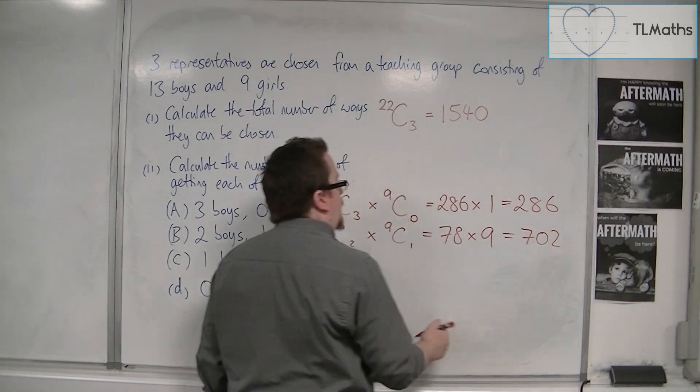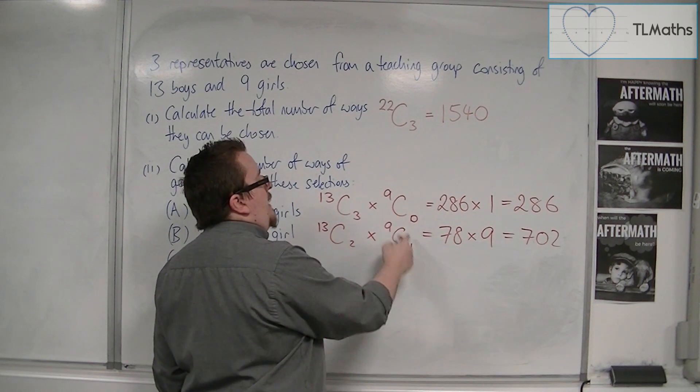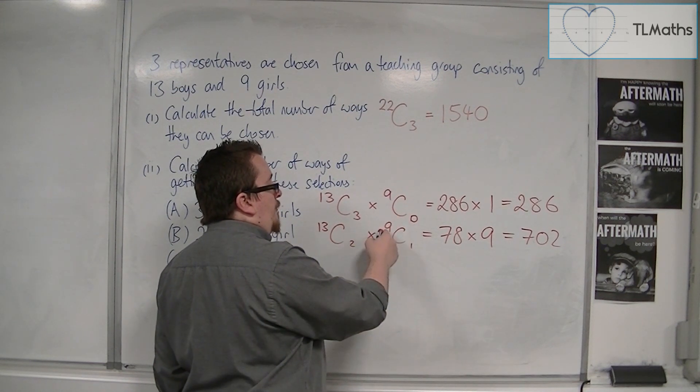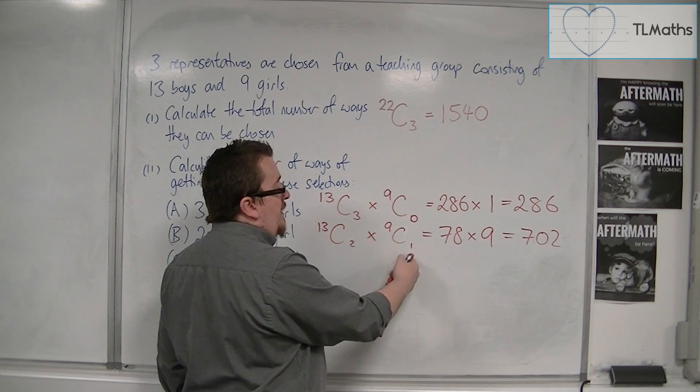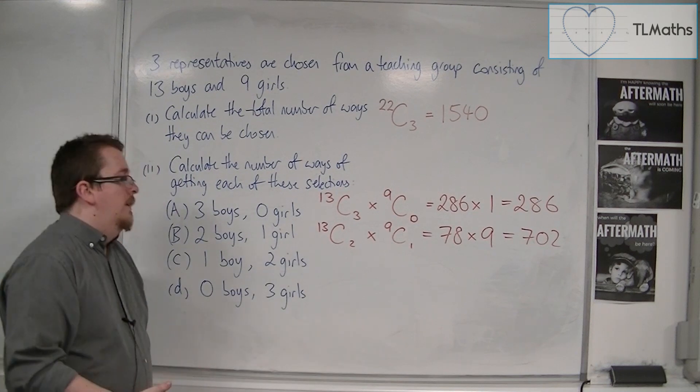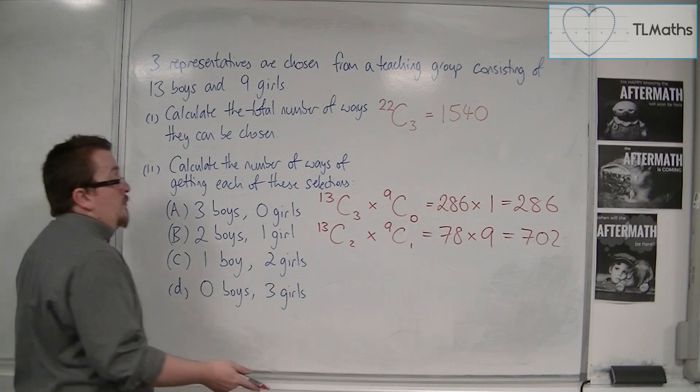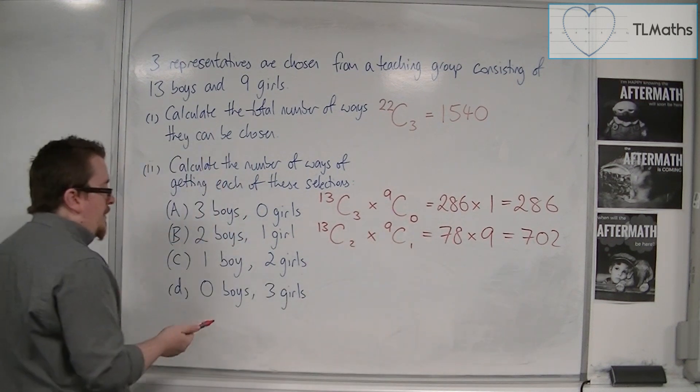Now, what you should find is that any time that this number is 1, then 9 NCR 1 will be 9, 10 NCR 1 will be 10, 1000 NCR 1 will be 1000. Just keep that in mind when you're doing these calculations.